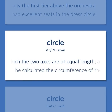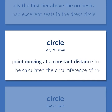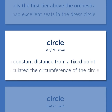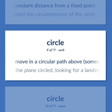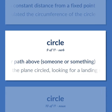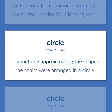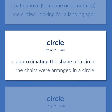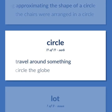Ellipse in which the two axes are of equal length. A plane curve generated by one point moving at a constant distance from a fixed point. He calculated the circumference of the circle. Move in a circular path above someone or something. The plane circled looking for a landing spot. Something approximating the shape of a circle. The chairs were arranged in a circle. Travel around something. Circle the globe.